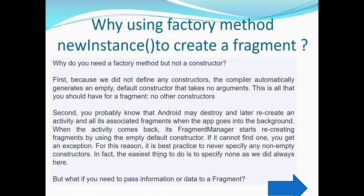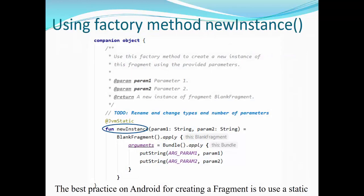But what if you need to pass information or data to a fragment? This is the case when you need to use Factory Method NewInstance. Normally, this method is generated by Android Studio when you create a new blank fragment. We have to use this method to create a new instance of this fragment using provided parameters one and two. In our case, it would be only one parameter. The method returns a new instance of fragment. This is the best practice for Android for creating fragment and instantiating fragment using these parameters. Then apply these parameters in a bundle in the form of arguments. So we create a bundle of argument one and argument two. And these arguments will be supplied with the instance of the fragment when we need them.